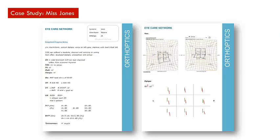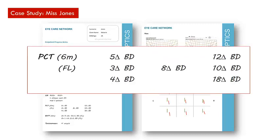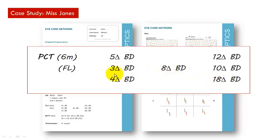Coming back to our case study, Ms. Jones: the PCT has been performed in various positions of gaze. Elevation and depression were not measured, but we do have the deviation in right gaze and left gaze. In primary position there is an eight prism diopter vertical deviation with the patient fixing left, giving a right hyper — also noted on the cover test. The deviation increases in left gaze, with the greatest deviation in levo-depression, and decreases in right gaze.